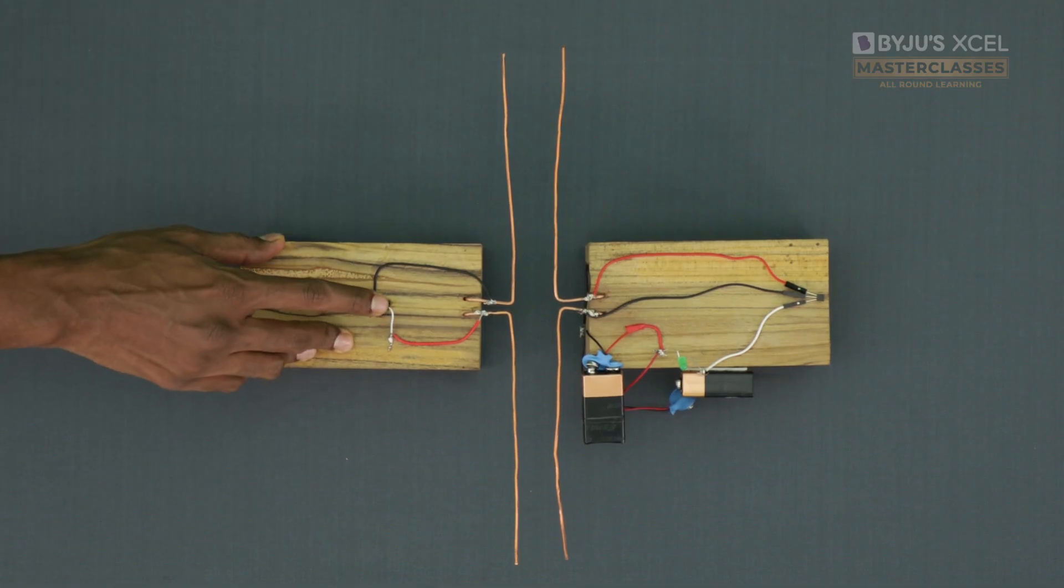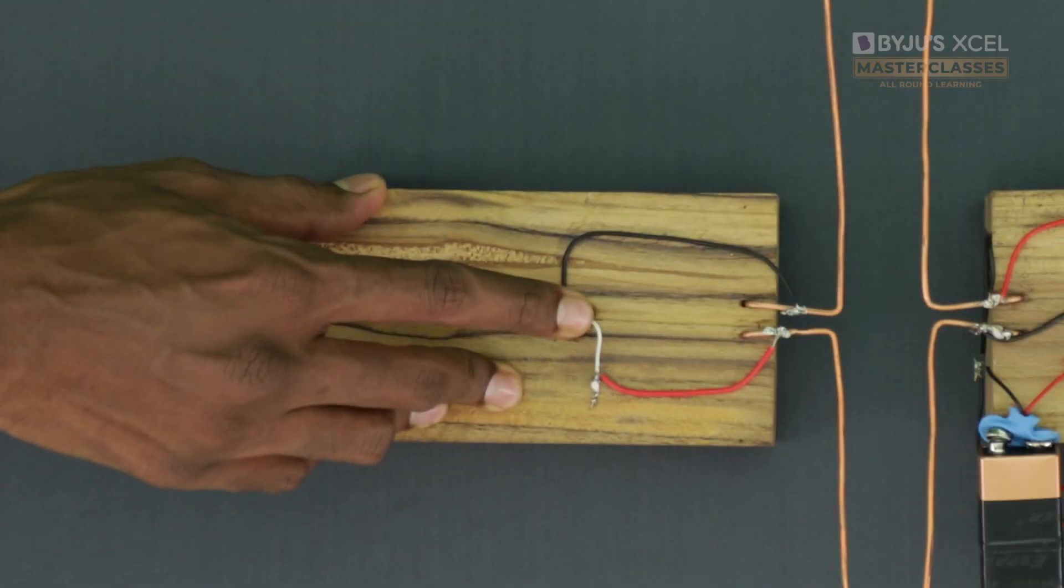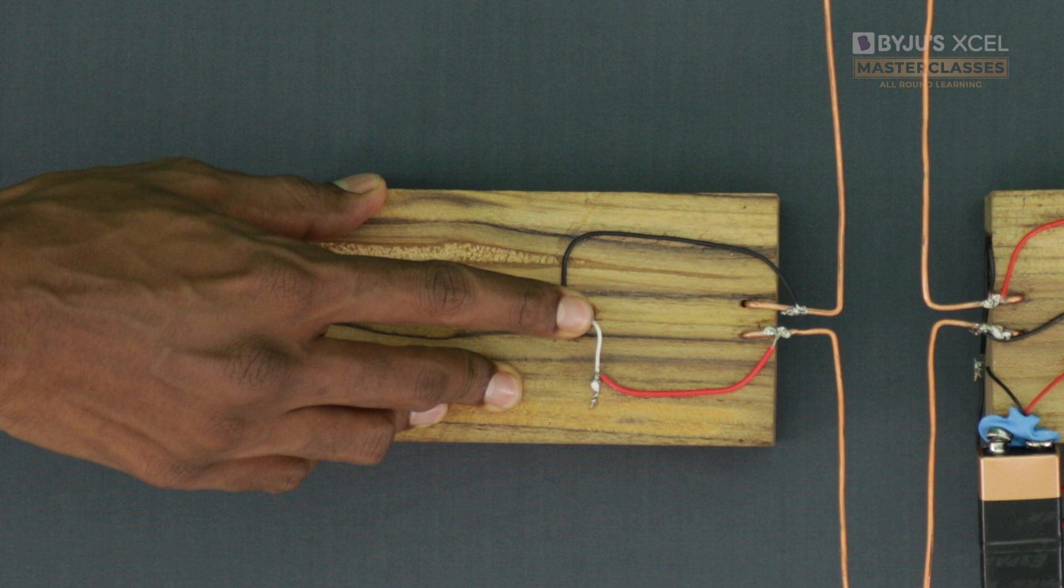When the switch is pressed, it creates a high voltage difference that generates a spark on the transmitter. The spark causes pulses of electric current to flow through the copper wires. The charged particles inside the wire oscillate rapidly,